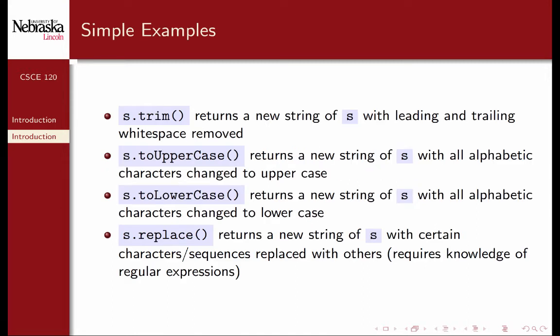Some examples: if I have a string stored in a variable s, there are various functions that I can invoke on that string. For example, s.trim will return a new string of s with leading and trailing white space removed. However, the original string s is unchanged because it's immutable. There are also functions to return a new version of s with alphabetic characters changed uppercase, and toLowerCase which returns a new version of the string with all alphabetic characters changed to lowercase. A more advanced replace function can be used to replace certain characters or sequences, substrings, with others. However, this requires full knowledge of regular expressions which we won't go into here.